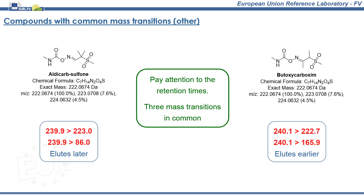Finally, one of the most complicated pairs in this online video tutorial. Aldicarb sulfone and butoxycarboxime share at least three mass transitions. Ion ratios are slightly different and, although resolution is poor, they do not fully overlap. Pay attention to the retention times and their respective ion ratios.